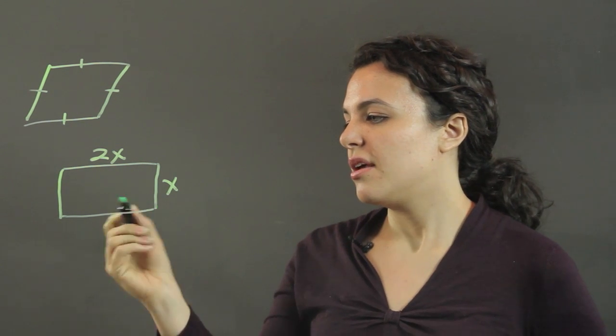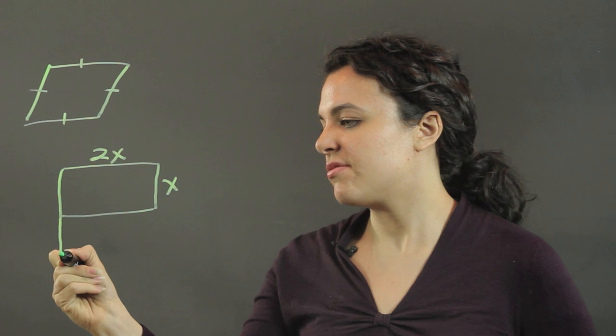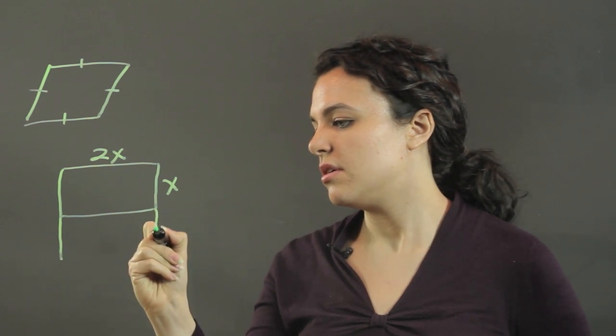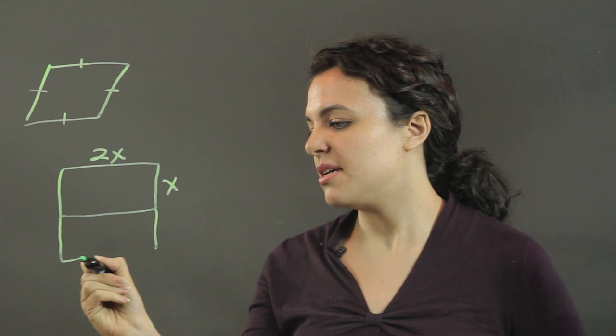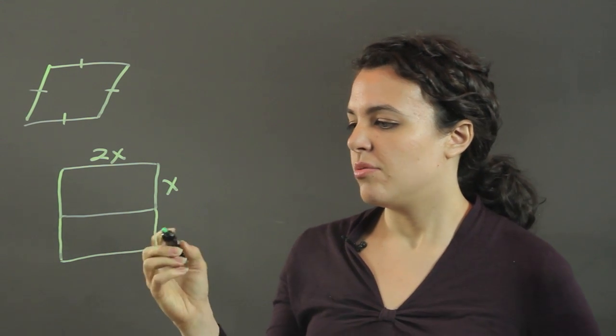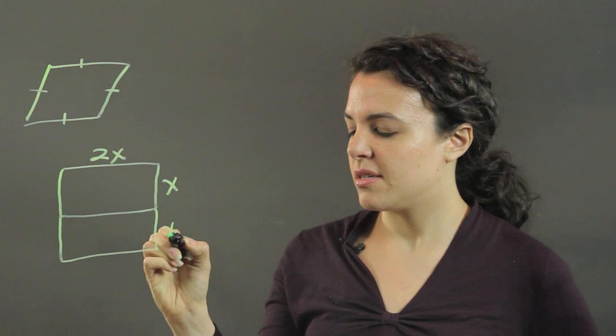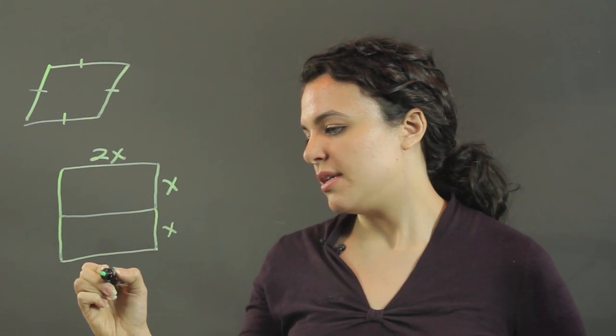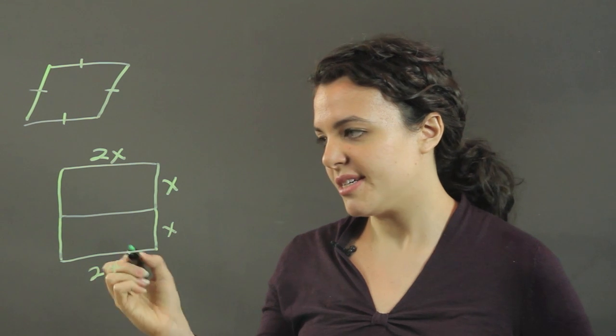So, if I then join a second rectangle of the same size, where again, if its width is x, its length is twice its width.